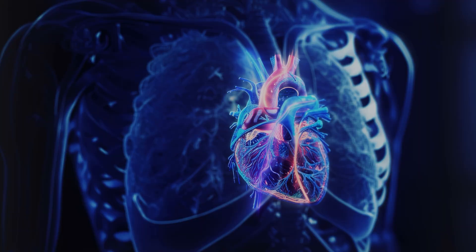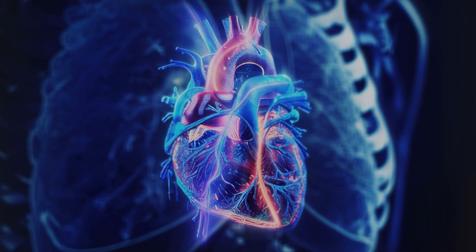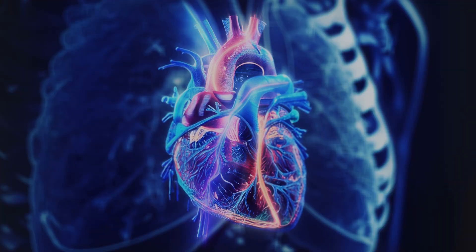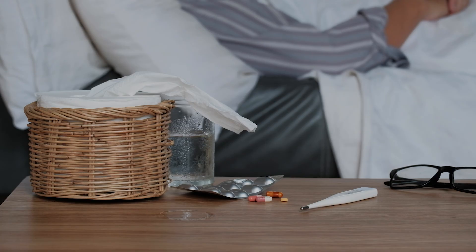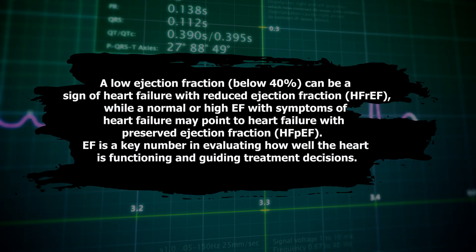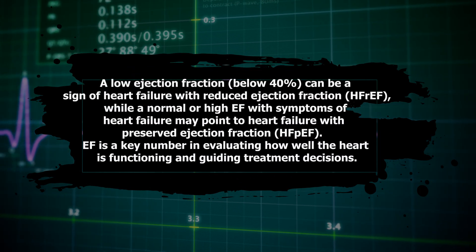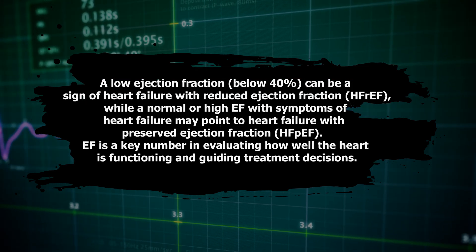The heart doesn't eject all of its blood with each pump at rest — it leaves some in reserve. Why? That reduced percentage means the heart has the ability to increase its pumping should it have the metabolic demand, either from exercise, illness, or other metabolic needs. At rest, the optimal ejection fraction should be 55 to 70%. In heart failure with reduced ejection fraction, that ejection fraction is lower, indicating the heart is not pumping at maximum ability and can't increase enough to meet metabolic demand.